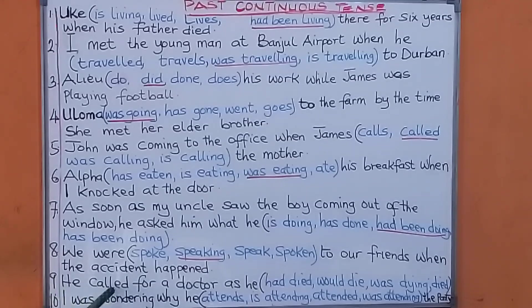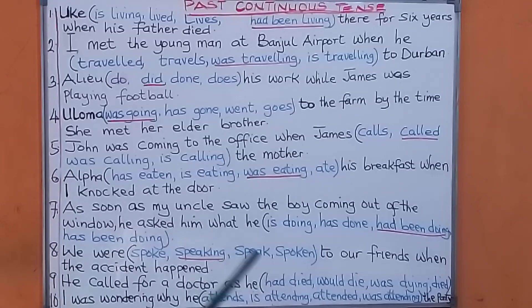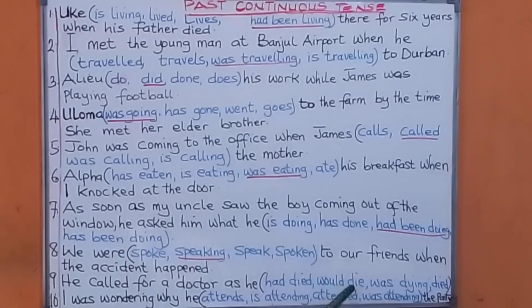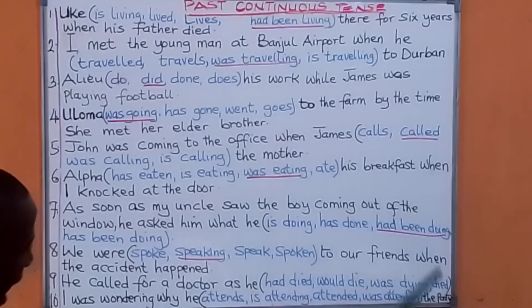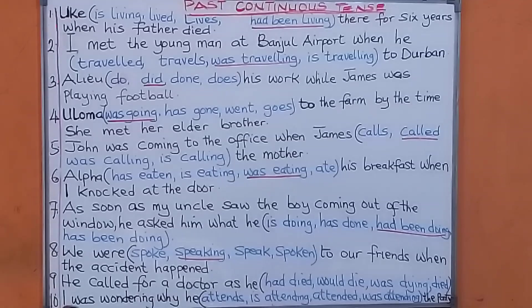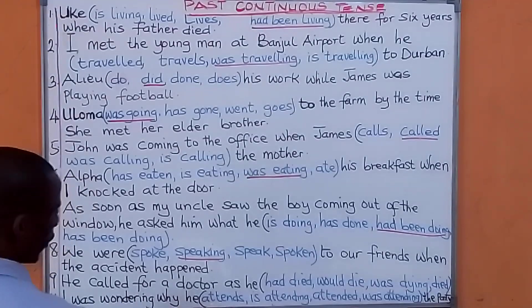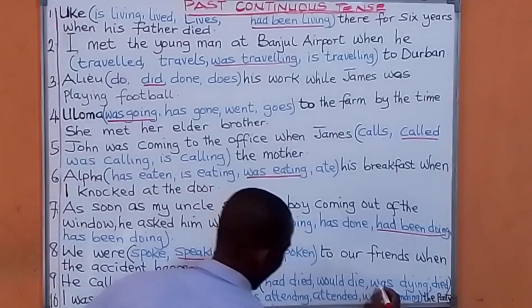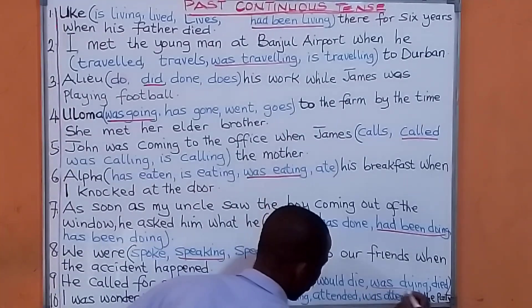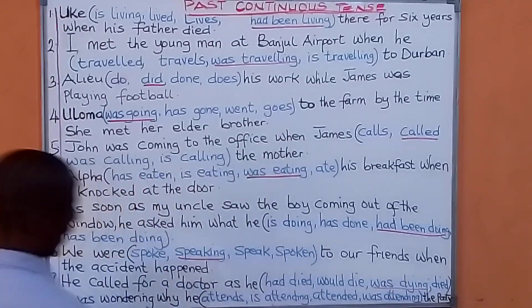Number nine: He called for a doctor as he — had died / would die / was dying / died. The answer: He called for a doctor as he was dying.